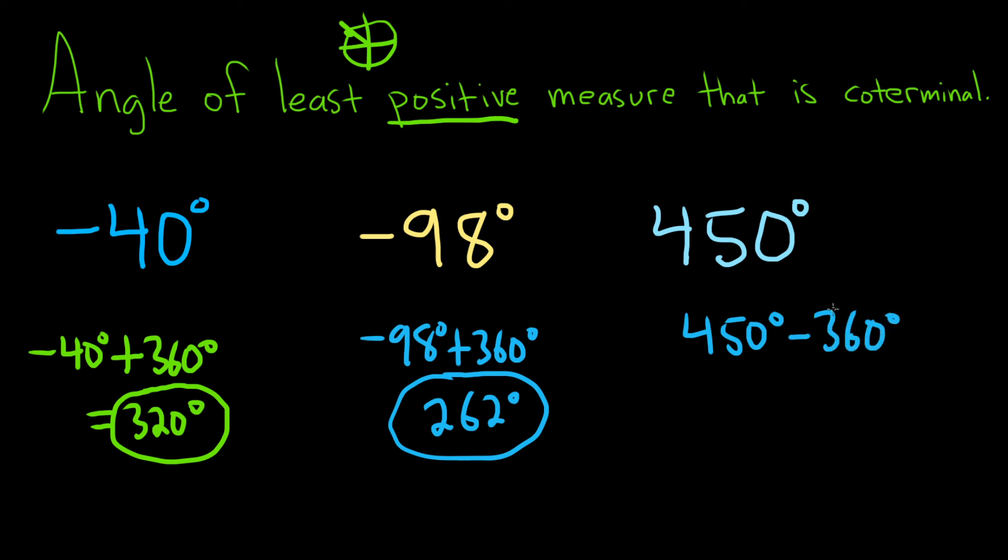you get 450 minus 360, just being extra cautious, 90 degrees. And that's the answer because if you subtract 360 again, you'll actually get a smaller angle. So basically you just add or subtract 360 and try to get the smallest positive one.